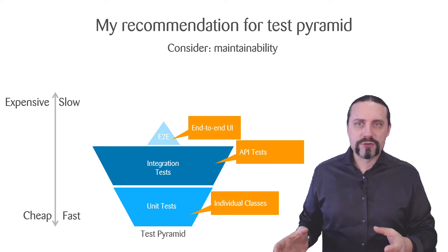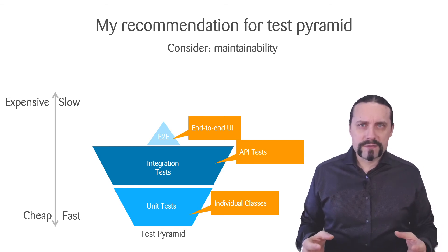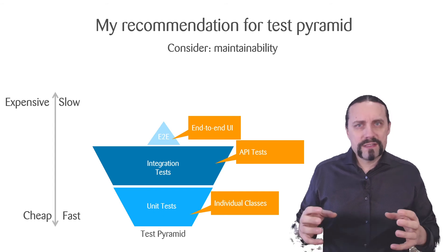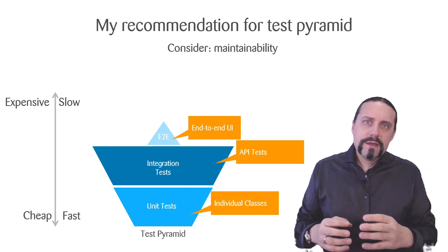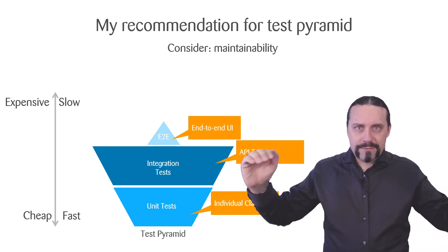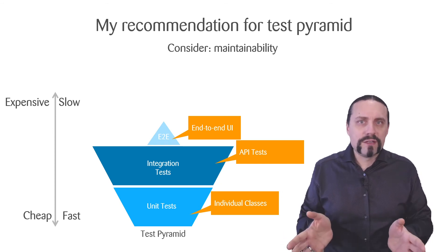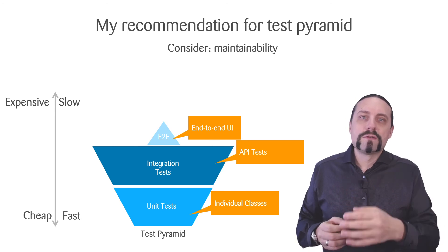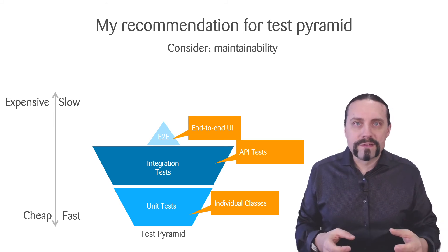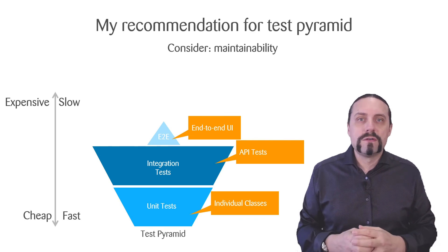My personal recommendation for the test pyramid looks like this. Based on many years of software development experience, having a lot of unit tests is not ideal because it tightens your application very much. My recommendation is to implement tests at the API level — have a lot of tests there and only a few at the unit test level. Then have some smoke tests as end-to-end UI tests, preferably automated. This ensures good maintainability of the whole application and of the tests.